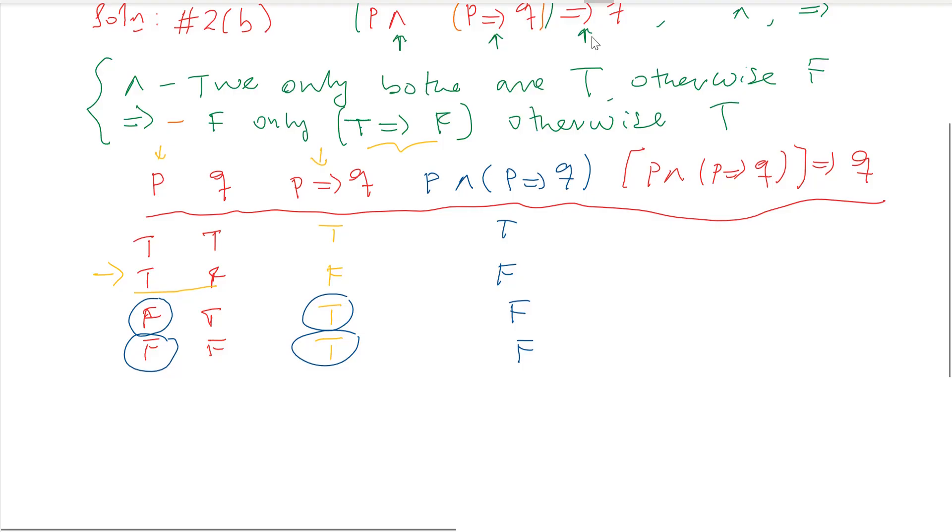So this one, [p ∧ (p→q)] → q. Q is here, p ∧ (p→q) is here. So this is the second column. This is the fourth column. So you do its implication. Implication. Let it be false. So let's insert it. We are going to do it backward.